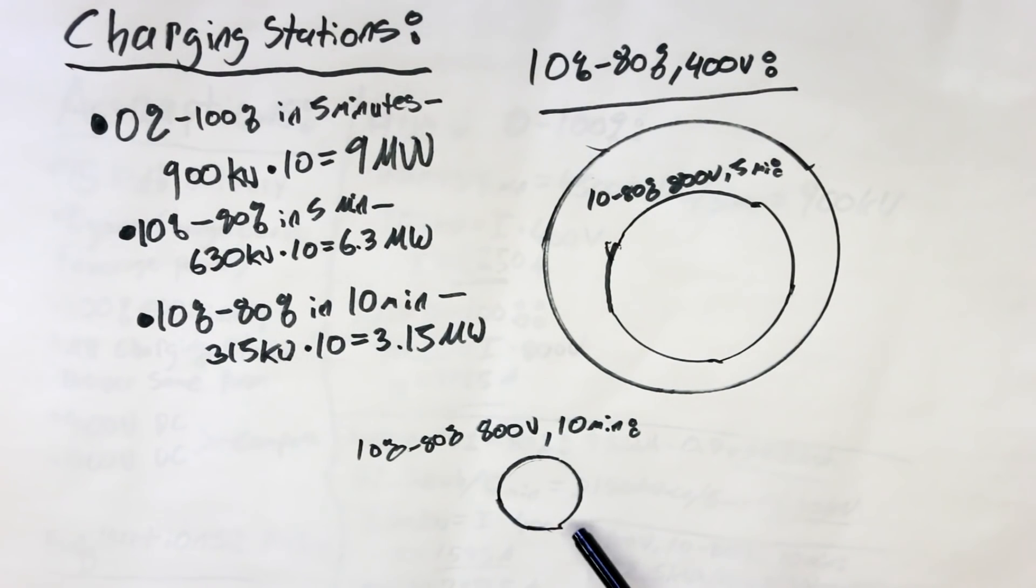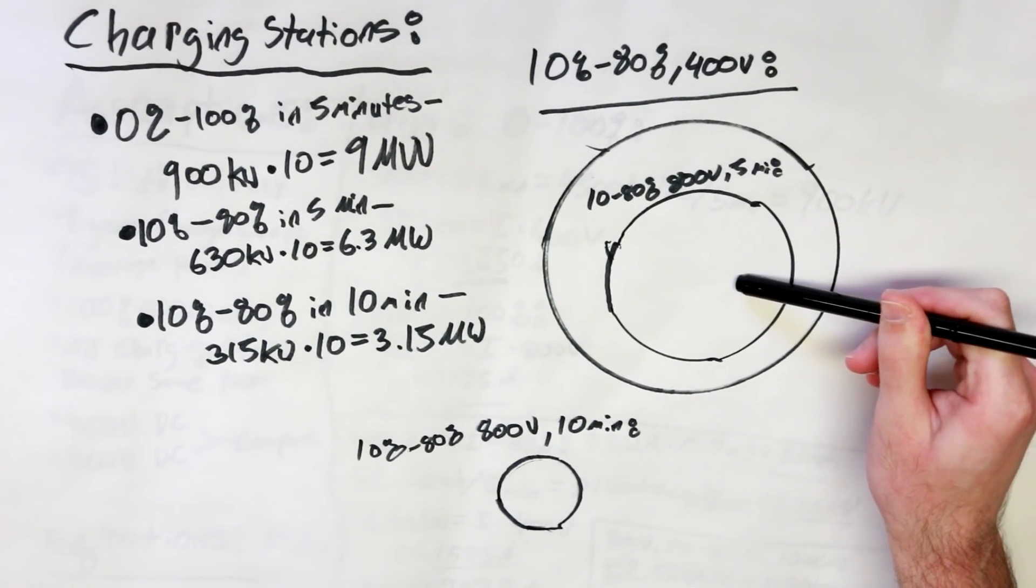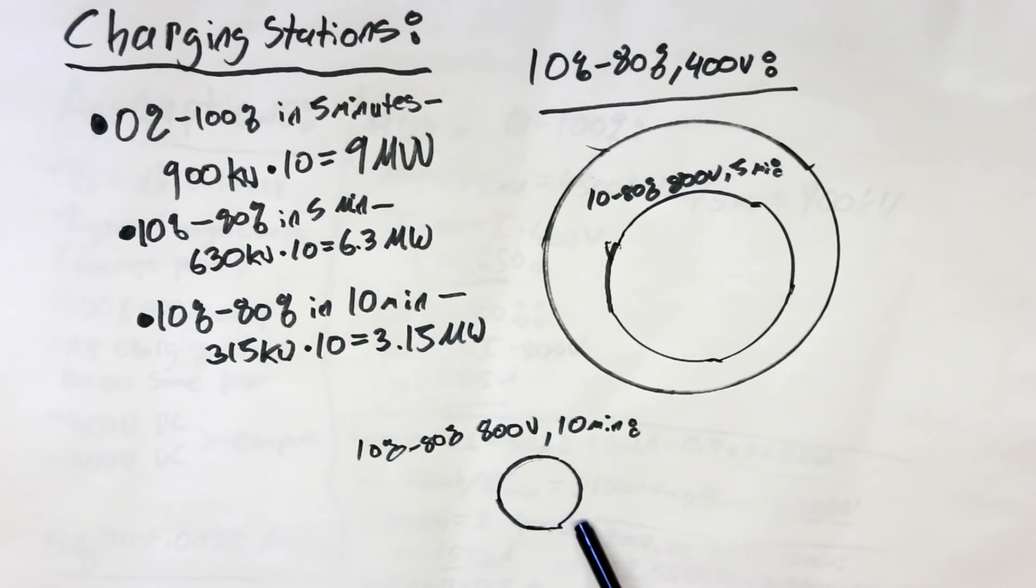When you compare these to each other, the 10% to 80% 800 volt 10 minute, the 800 volt 5 minute, and 400 volt 5 minute, this is looking a lot more realistic, isn't it?